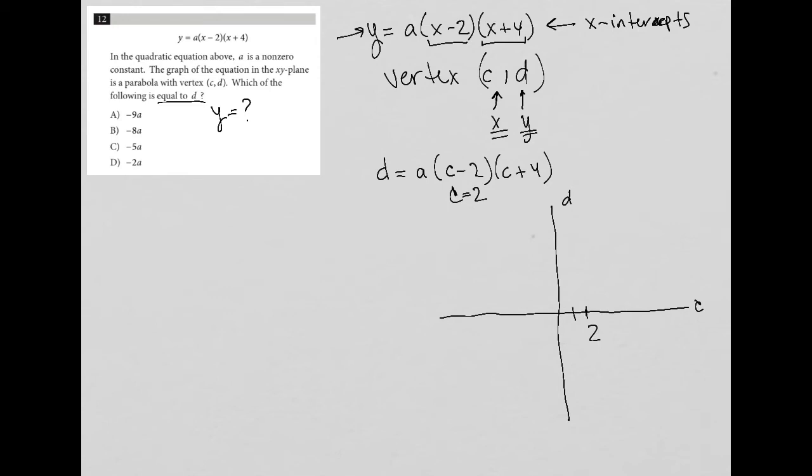I'd have an x-intercept, right? Because if I put 2 in, I'd get d equals 0, right? So I'd have like 2 comma 0, an x-intercept or c-intercept.